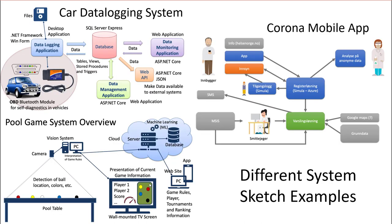Here you see some examples of different system sketches. In this example, a car data logging system is presented. We have different applications, a database, we write to file, we read from file — data from an OBD data logger unit — and put that data into a database, and we have different applications.